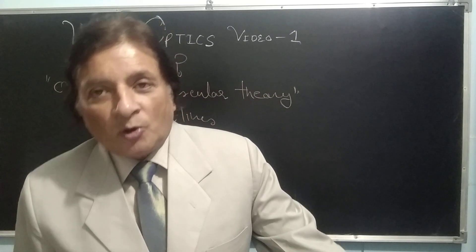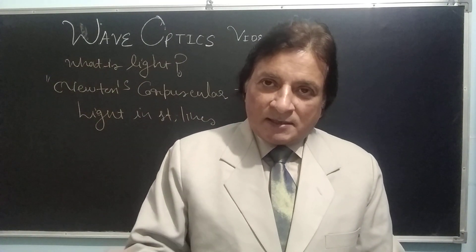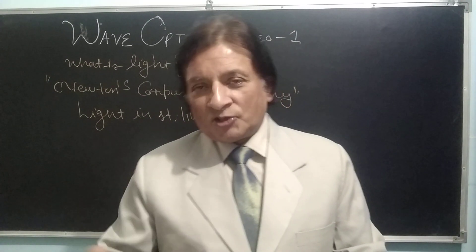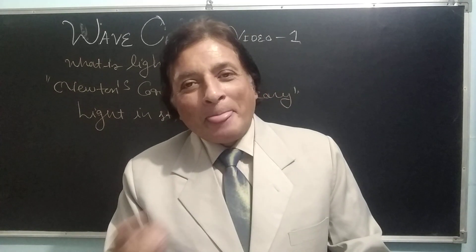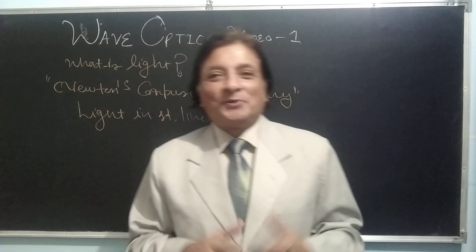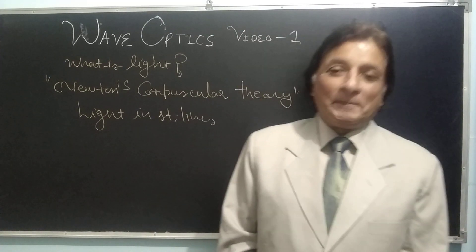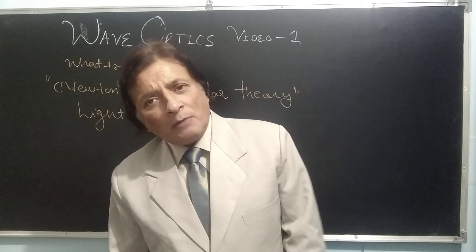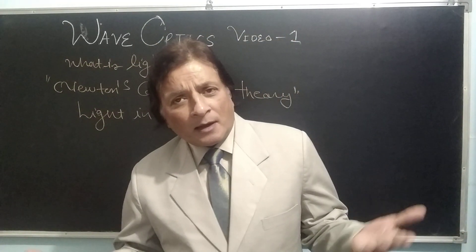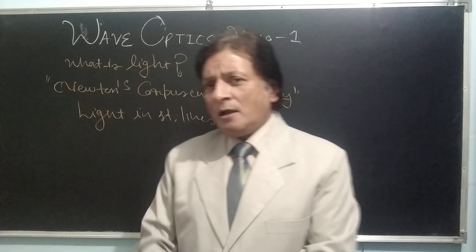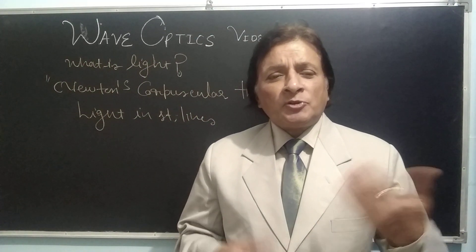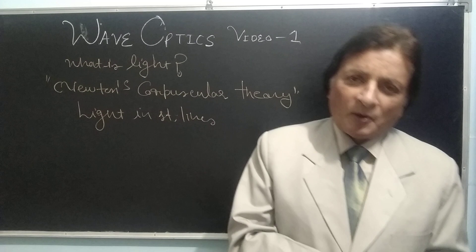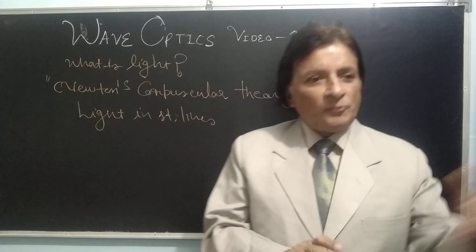Newton replied: 'Look, light is made of particles. Particles have mass, and because they have mass they have inertia. Inertia maintains direction — so particles travel in a straight line.' The person had no counter-argument and sat down. So: light travels in a straight line because of inertia, according to Newton's Corpuscular Theory.